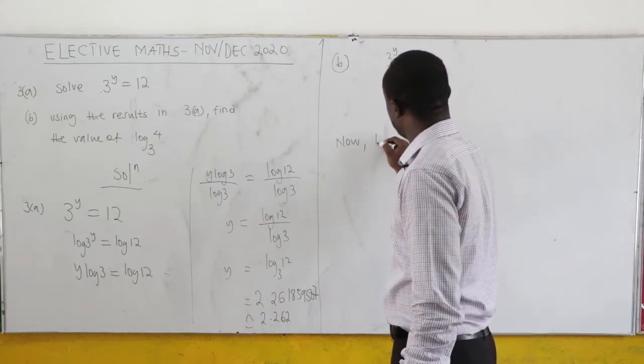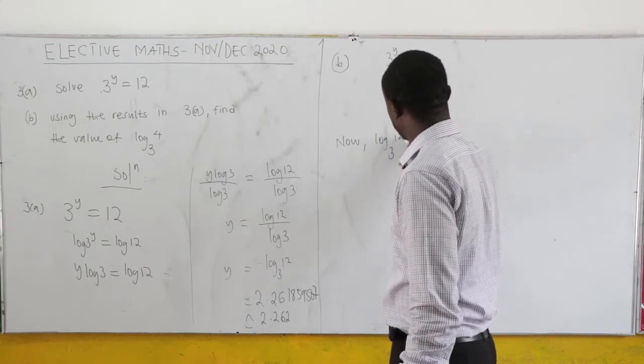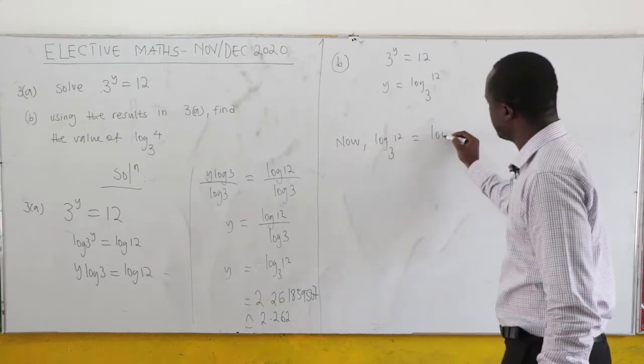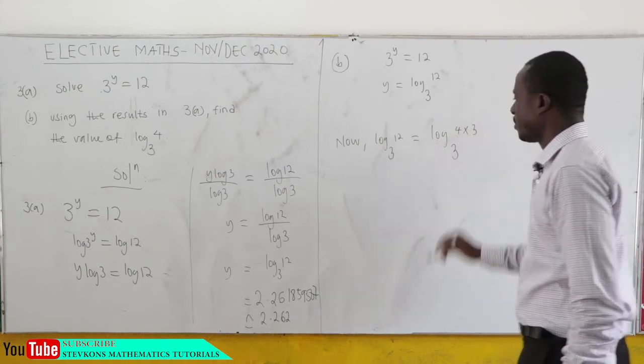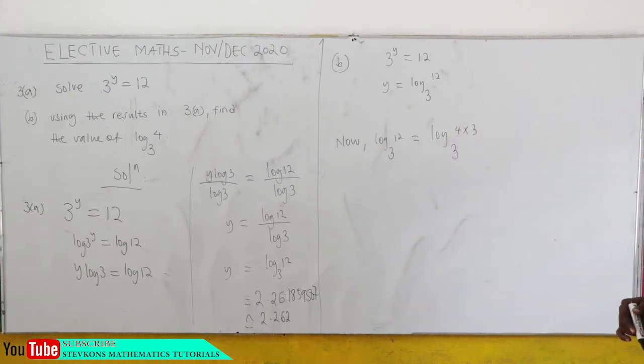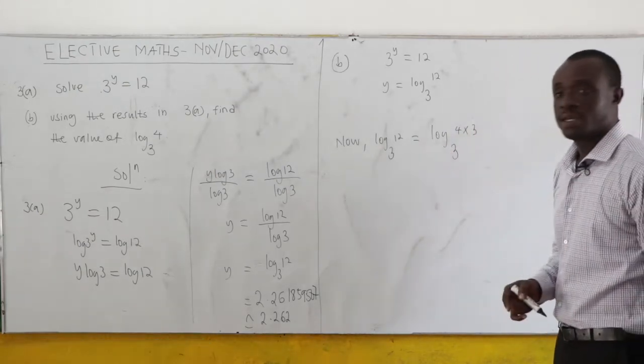Now, log₃12. This is the same as log₃(4 times 3). That's log₃12. 4 times 3 is 12.